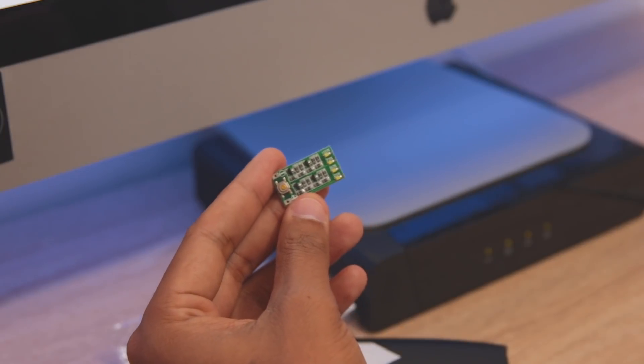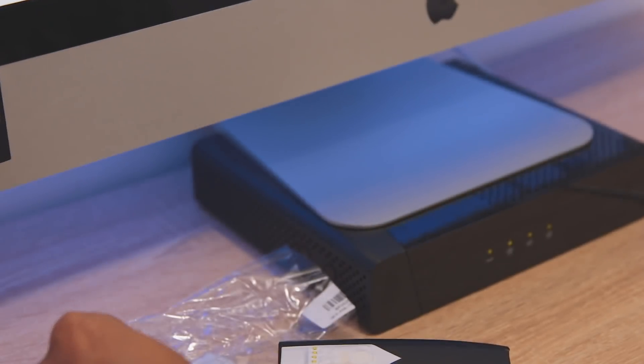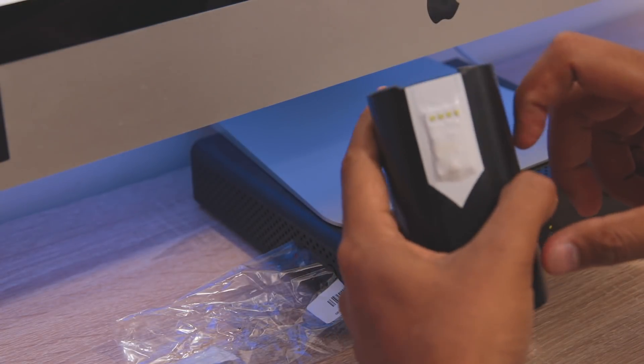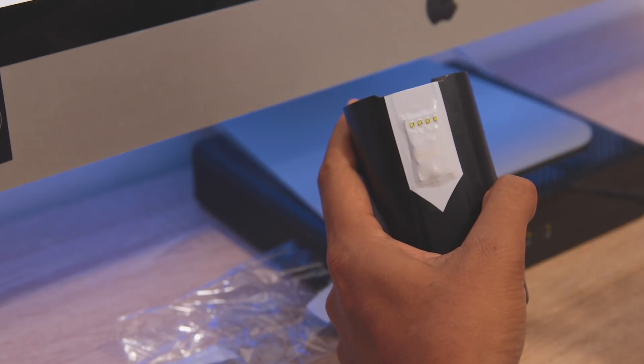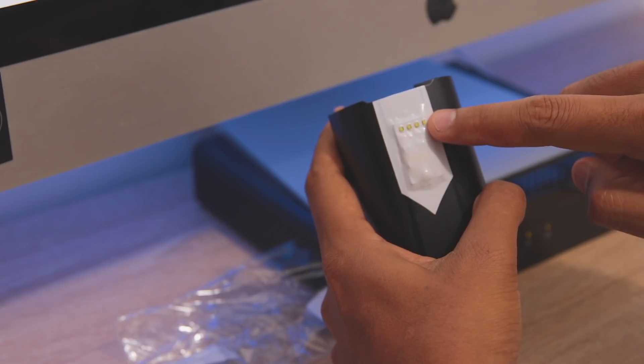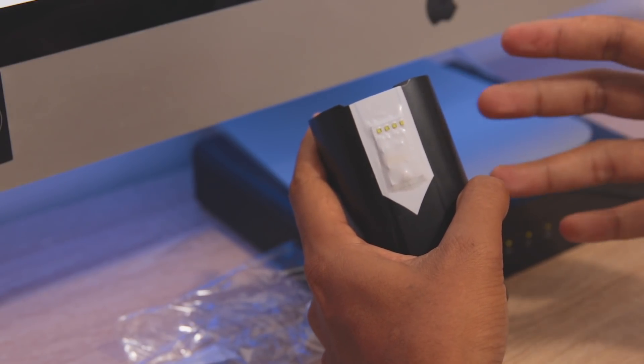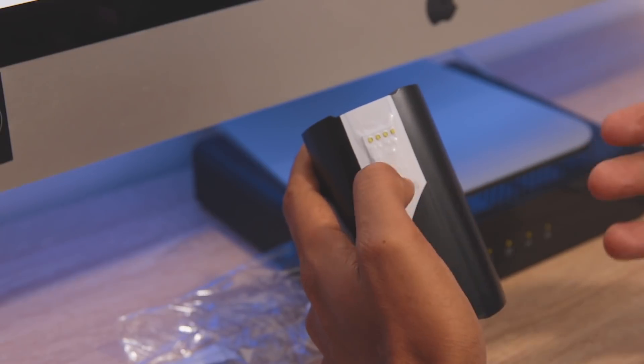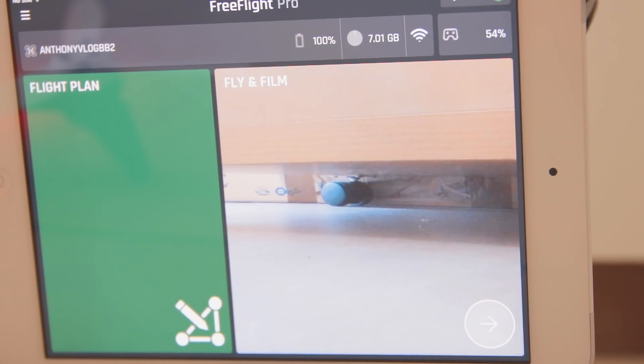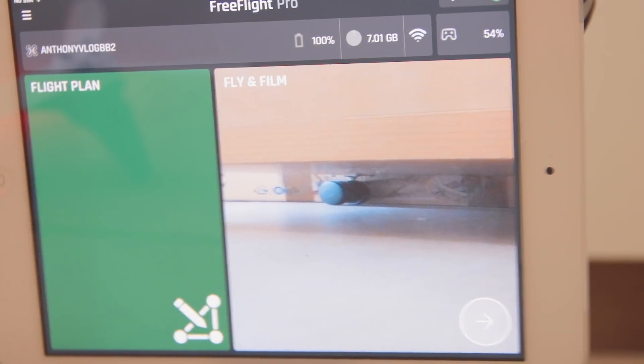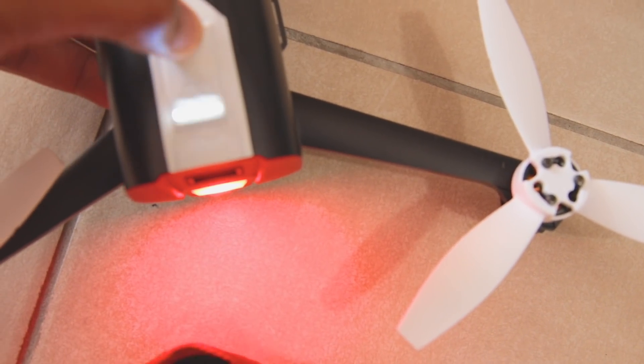I also did a battery drain test to see if the reading from the lights—the indicator on the battery—is somewhat accurate to what we are getting from the software, the software reading in percentage from the FreeFlight Pro. And I will just overlay some of the information.